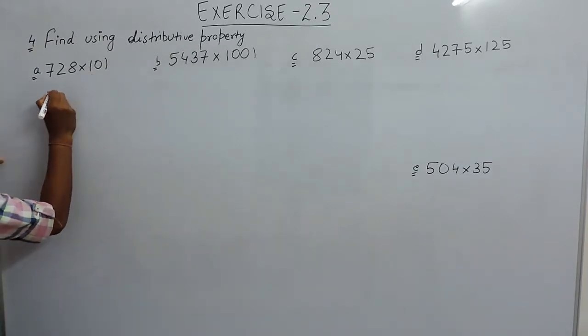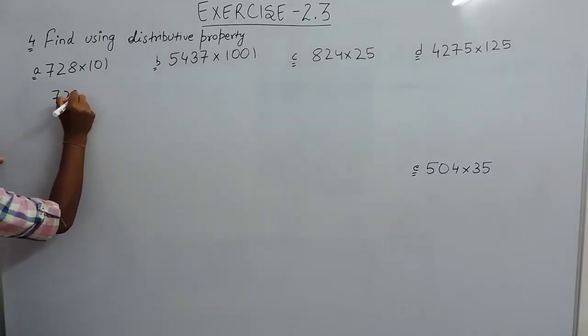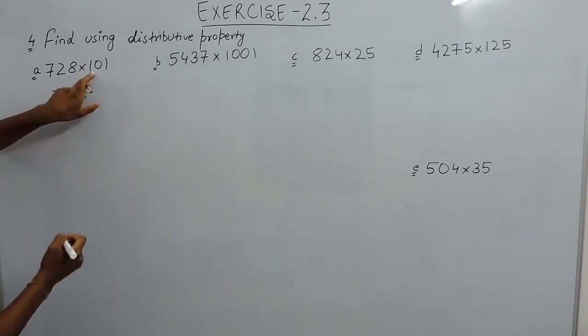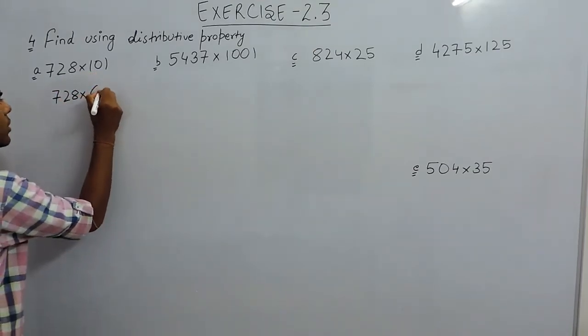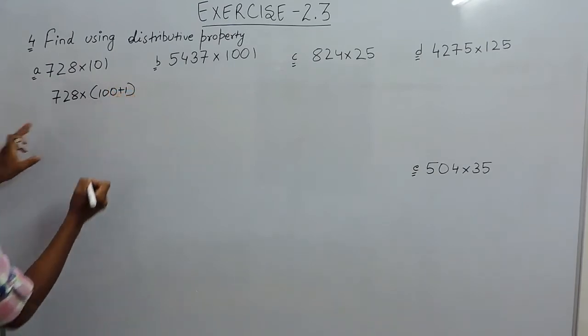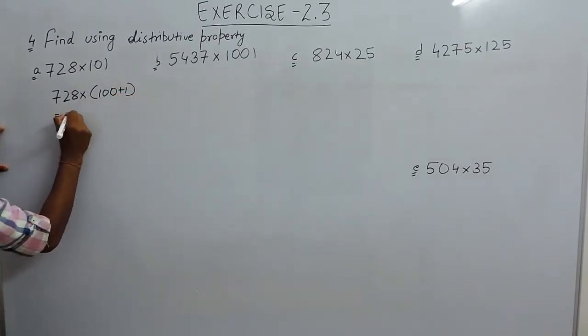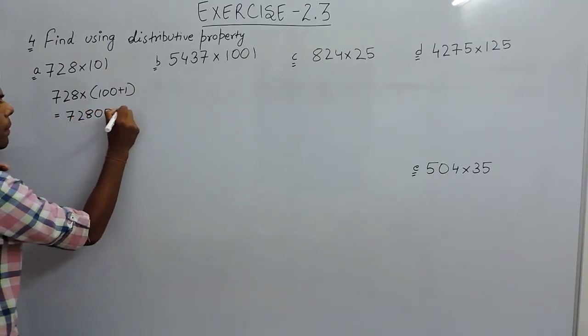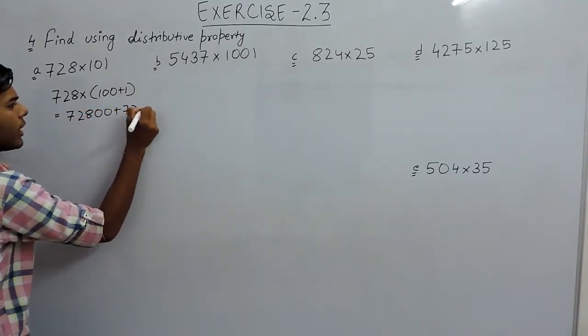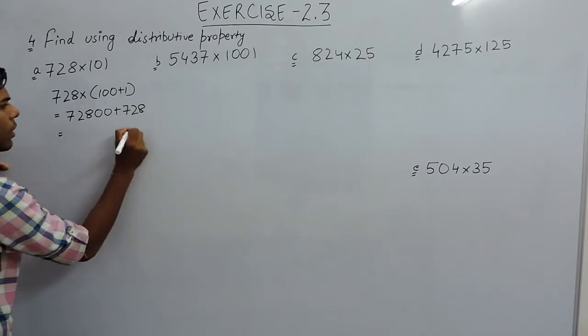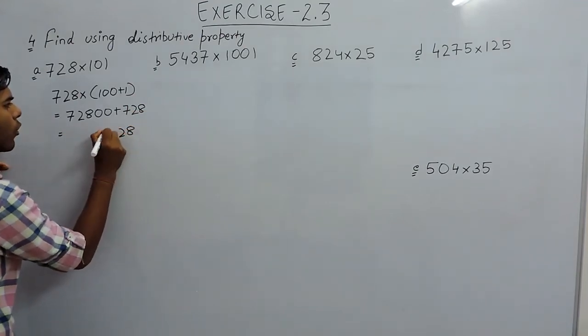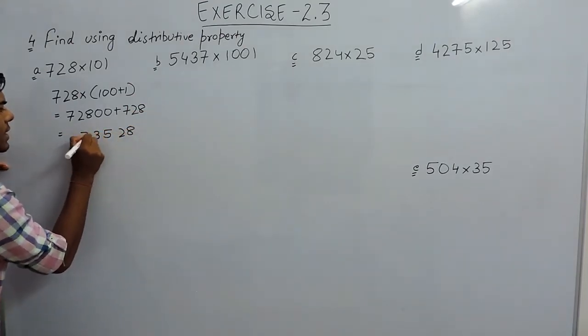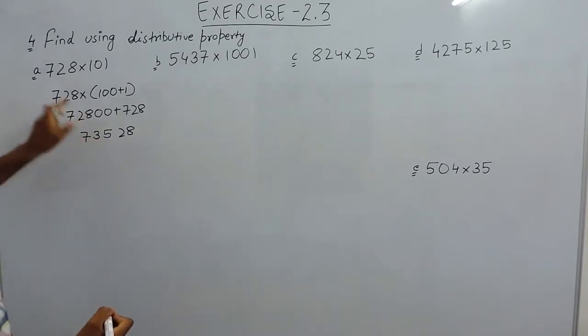So in this question we can write it as 728 multiplied with 101, and 101 can be written as 100 plus 1 because we know the table of 100 as well as 1. So that will be 72800 plus 728, so that will be 73528. This is the required answer of part A.